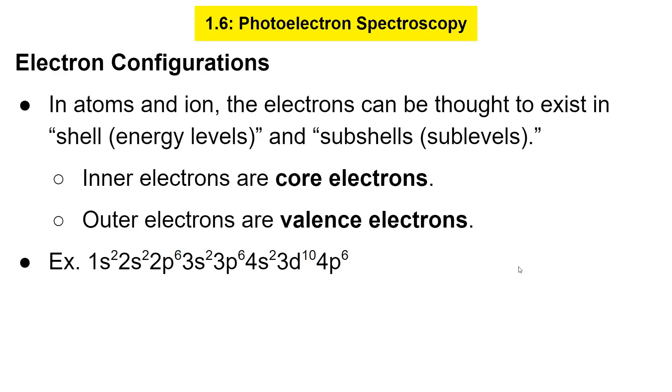Below is an example of an electron configuration. The energy levels are the ones, twos, threes that you see there in front. And then the subshells or sublevels are the letters that you see: S, P, D, and so forth.